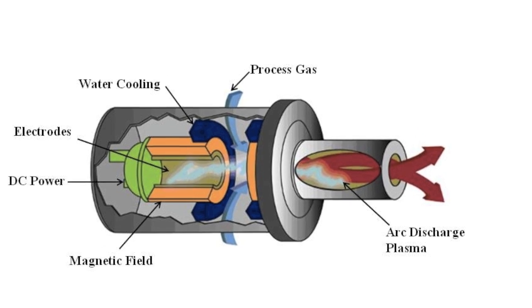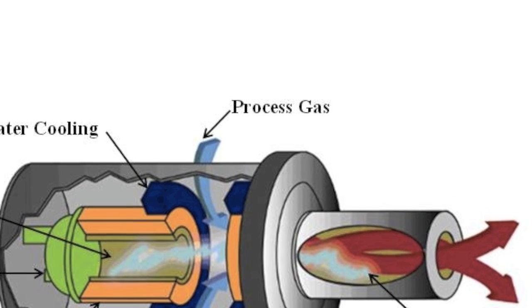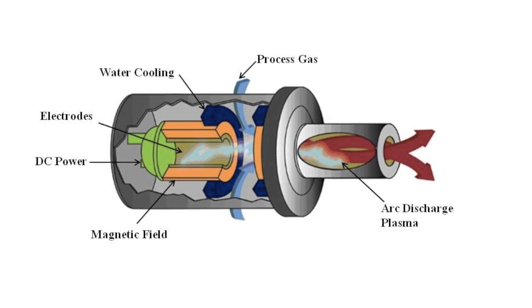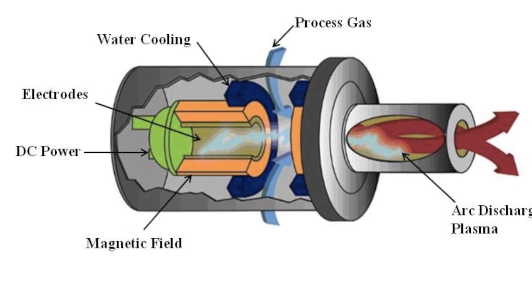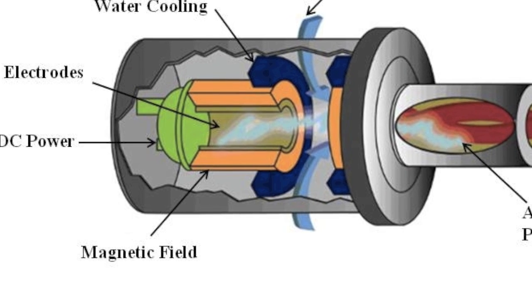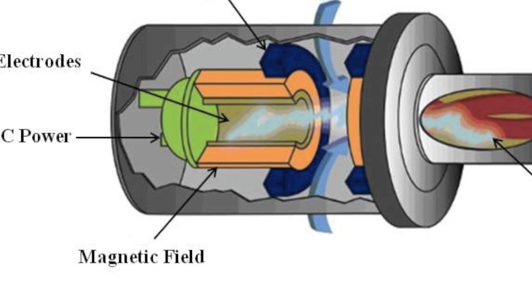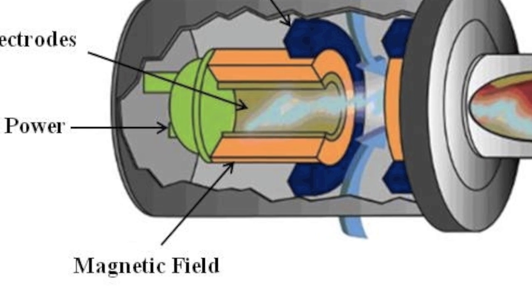After ignition of the plasma, injected process gas, usually air or oxygen, maintains and stretches the arc discharge. Also, solenoid magnetic field cores around the discharge interact with the plasma to make it rotate at about 1000 rpm. This stabilizes the arc and boosts the heat transfer between the plasma and the incoming process gas.